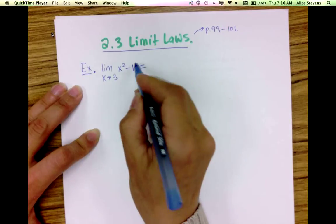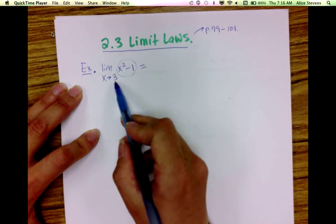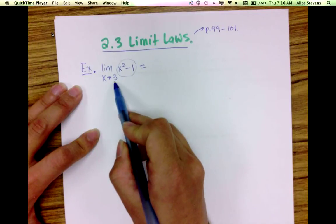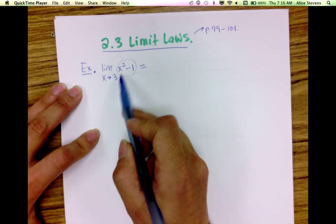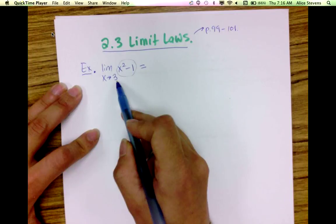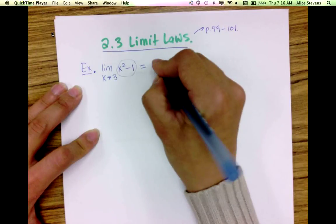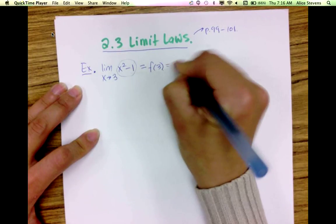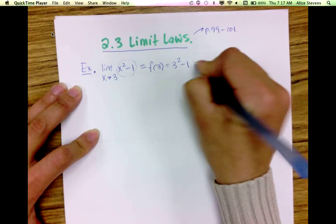The function here is a polynomial function, and since it's a polynomial function and 3 is in the domain of the function, the direct substitution property tells me that the limit is just f(3), which is just 3 squared minus 1, which is 8.